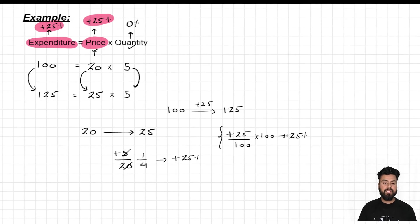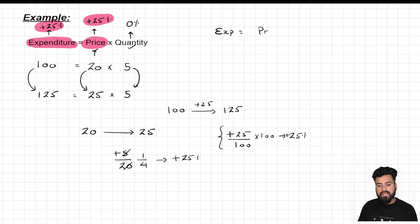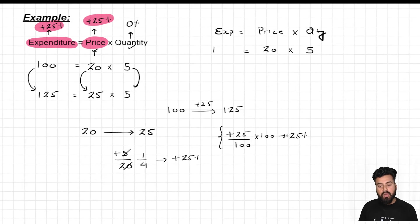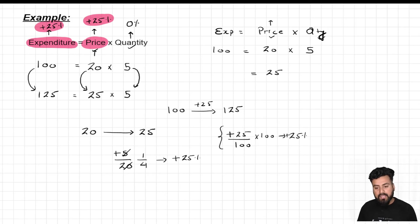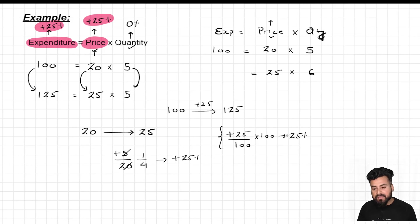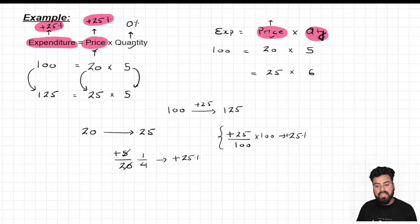Let me change this scenario a little bit now. On the same formula — expenditure equals price into quantity — the first case is same: price is 20 rupees per kg, I consume 5 kg, so expenditure is 100. Let's increase the price again from 20 to 25. But this time, along with increasing the price, I'm also increasing the quantity. Previously I was consuming 5 kg, and now I'm consuming 6 kg. So this time I've changed both variables on the right-hand side — both price and quantity — and I've increased both.